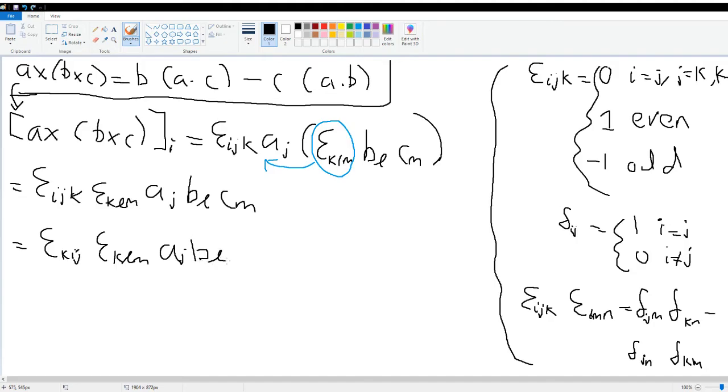This is the same thing as epsilon_kij epsilon_klm a_j b_l c_m. We are rearranging the subscripts and then just changing the order of it. This is the same thing as the identity over here, so we can rewrite this using the Kronecker delta symbols: delta_il delta_jm minus delta_im delta_jl times a_j b_l c_m.